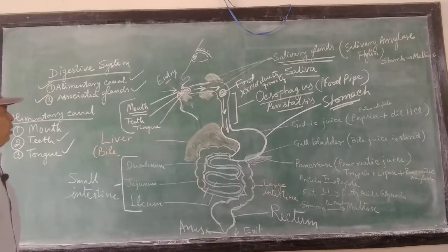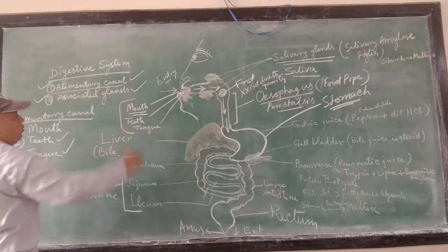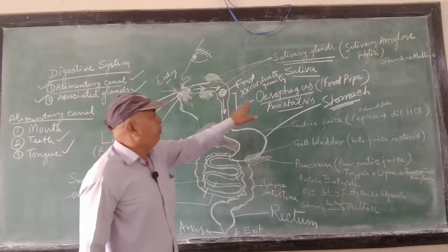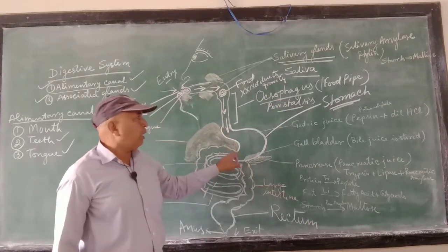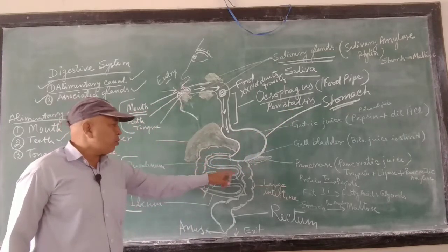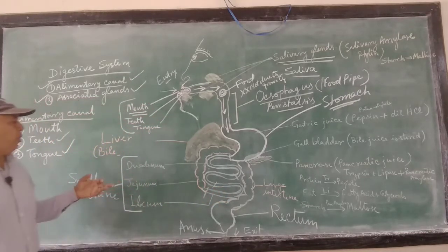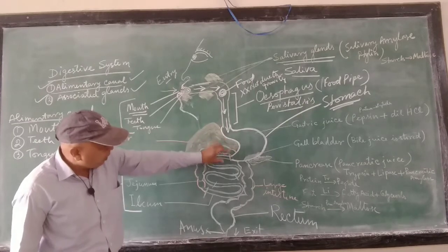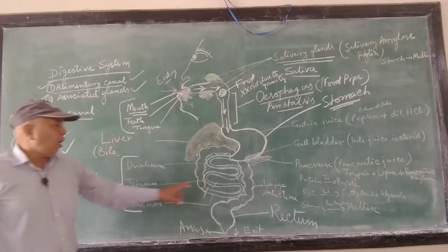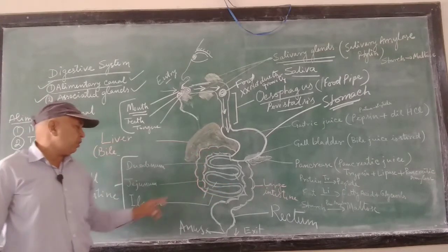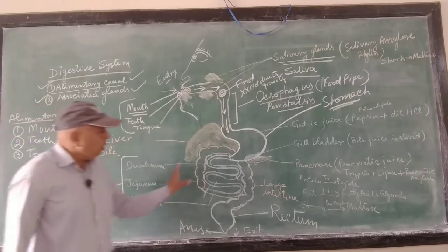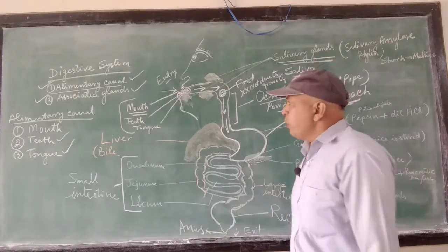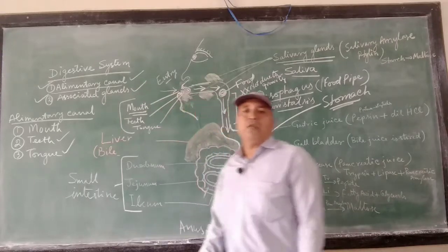Let us recall the parts of the alimentary canal: mouth, teeth, tongue, then the food pipe or esophagus, then the bag-like stomach. Stomach continues as small intestine — read as duodenum, jejunum, and ileum. The part from stomach is duodenum, the middle part is jejunum, and the last part opening into the large intestine is ileum. Then comes the large intestine, and at last rectum and anus. These are the parts of the alimentary canal of the human digestive system.